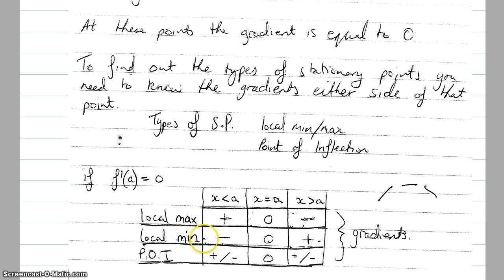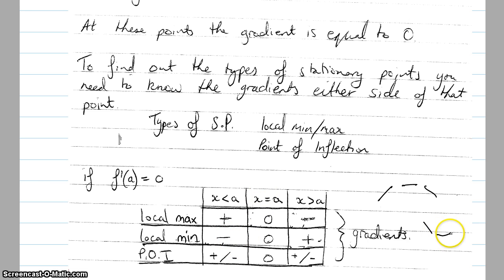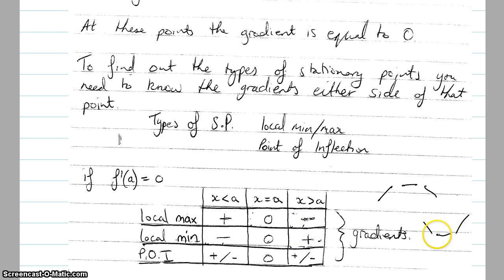If we have a local minimum, we'll have a negative gradient before x equals A, a zero gradient at x equals A, and then a positive gradient after x equals A, giving us a local minimum.